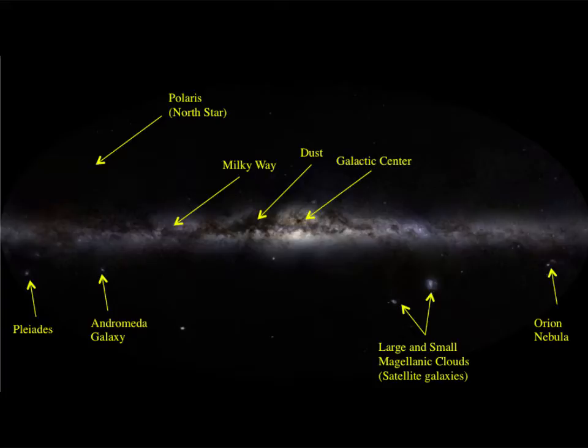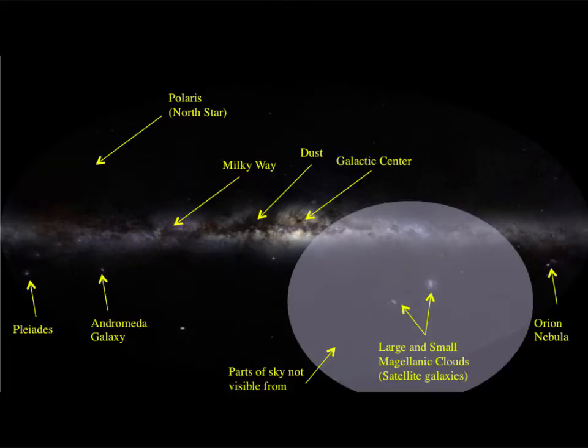Some objects you may have heard of are noted below the Milky Way: the Pleiades star cluster, the Andromeda galaxy, and the large and small Magellanic clouds. The Magellanic clouds are only visible from the southern hemisphere, but they're satellite galaxies of the Milky Way. The Orion Nebula is there on the right. Part of this image you can only see from the southern hemisphere, and an oval indicates what you would need to go south of the equator to see.